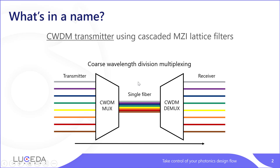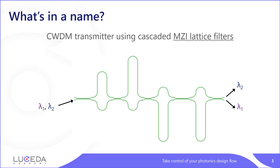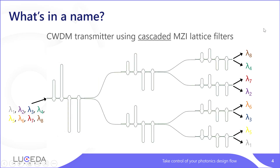The way we want to achieve this is by using MZI lattice filters. An MZI lattice filter is a filter based on several Mach-Zehnder interferometers, which are built using directional couplers. In a simple MZI lattice filter, you have two incoming wavelengths, lambda 1 and lambda 2, which are then split into two separate waveguides. We can cascade several MZI lattice filters to obtain a more complex circuit capable of splitting more than two wavelengths — in this example, eight incoming wavelengths split into eight channels.